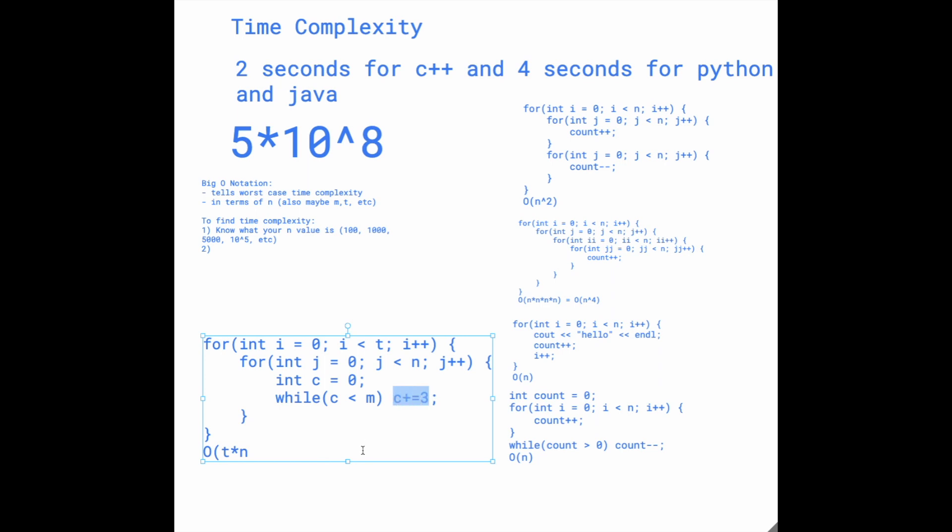But then, it actually increments by three. We're incrementing three times faster than just a regular incrementation if we went by one. It's technically m over three iterations. But we don't really care about the constants. We want to keep it in terms of the variables, so let's just leave it like that. The big O notation for this code would be t times n times m.